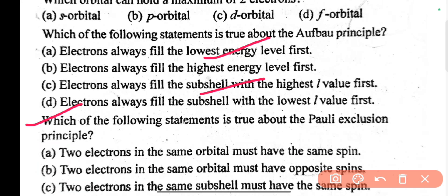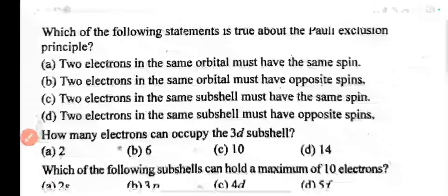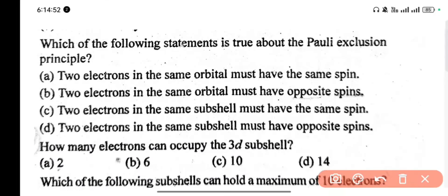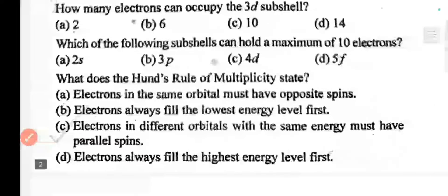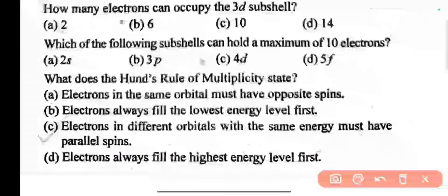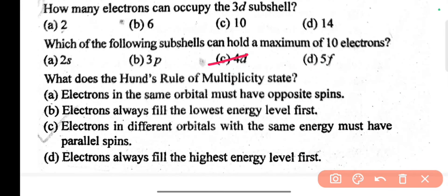The next question is about the Aufbau principle — the correct answer is A. Which of the following statements is true about the Pauli exclusion principle? The correct answer is B. How many electrons can occupy the 3d subshell? The correct answer is six.